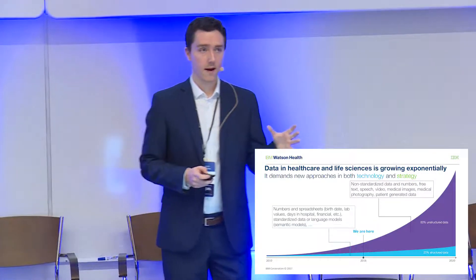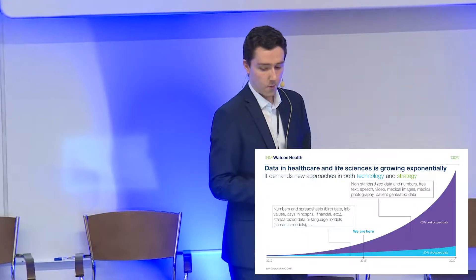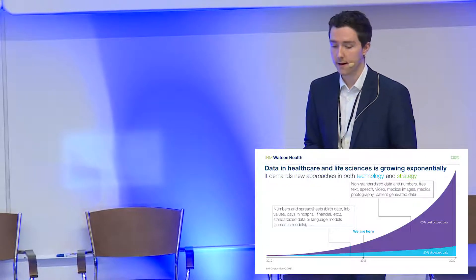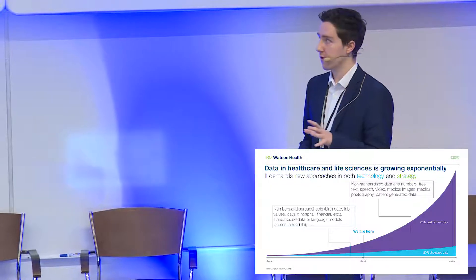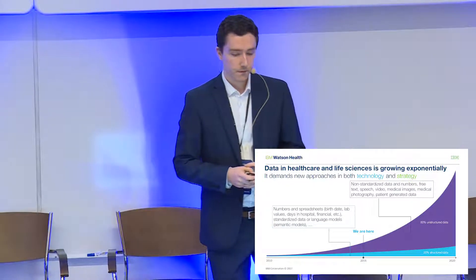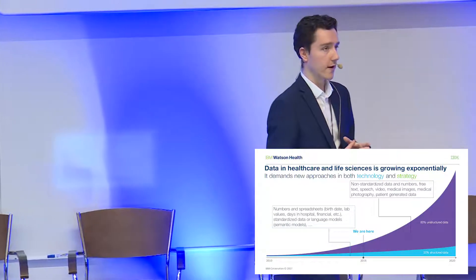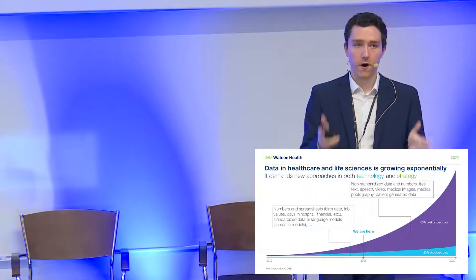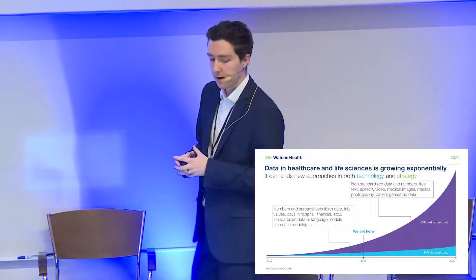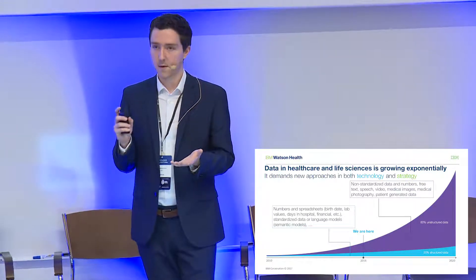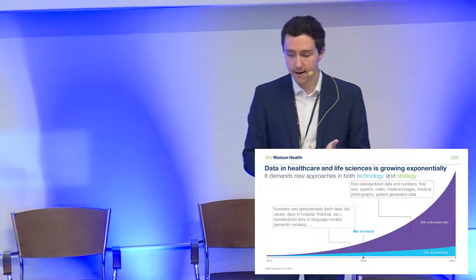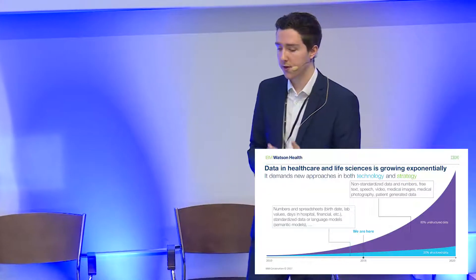If we look at the healthcare and life sciences domain, we're seeing an explosion of health-related and life sciences data. Now most of this — around 80% — is what we call unstructured data. This differs from what we see in traditional rows and columns, which is easy to interpret by programmable systems. This unstructured data can come in many forms, such as within a patient's electronic medical record, free text, data from wearables, and genomics.